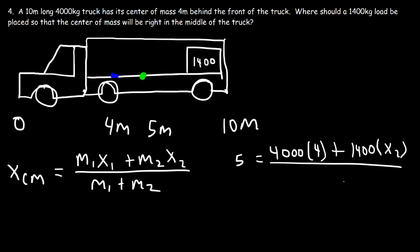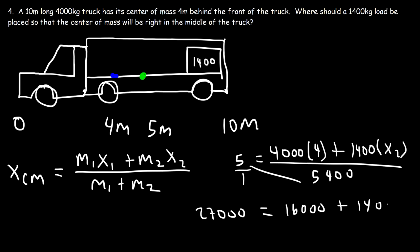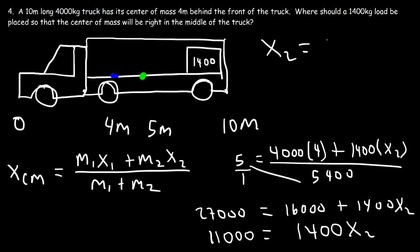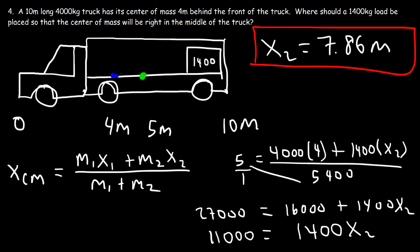The total mass is 4000 plus 1400, which is 5400. Cross multiplying: 5 times 5400 is 27,000. That equals 4000 times 4 which is 16,000, plus 1400·x2. Subtracting 16,000 from both sides: 27,000 minus 16,000 is 11,000, so 11,000 equals 1400·x2. Dividing both sides by 1400: 11,000 divided by 1400 equals 7.86 meters. That's where we need to place the 1400 kilogram load to move the center of mass from 4 to 5.